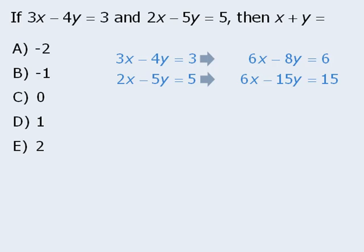Since we now have 6x in the top equation and 6x in the bottom equation, we can subtract the two equations to eliminate the x's. So here we have 6x minus 6x, so the x's cancel out. Next we have negative 8y minus negative 15y, which gives us positive 7y. And finally we have 6 minus 15, which equals negative 9.